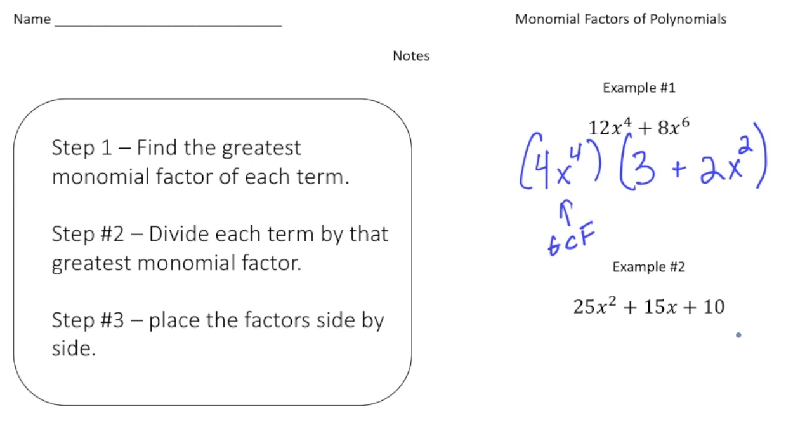All right, for example number 2 we have a trinomial, but you follow the same process. So step 1, I want to find the GCF of 25x squared plus 15x plus 10. And so I'm going to first look at the coefficients. So we have 25, 15, and 10, so the GCF of 25, 15, and 10 is just a 5. Now we have x squared and an x, but notice there isn't a common factor of an x over here, so we can't take those out. So our GCF is just going to be 5.